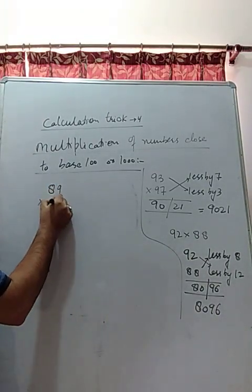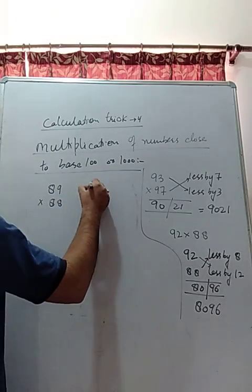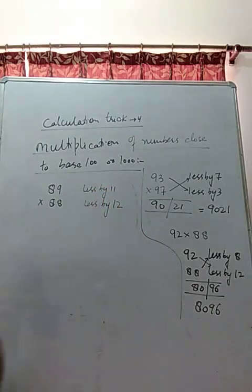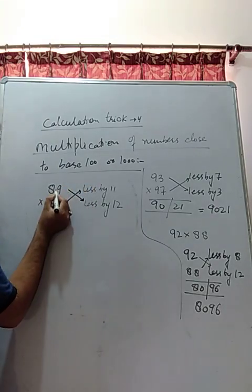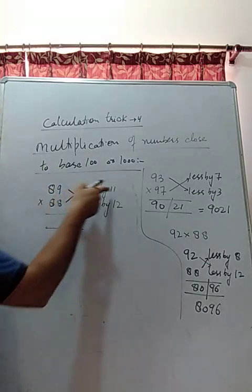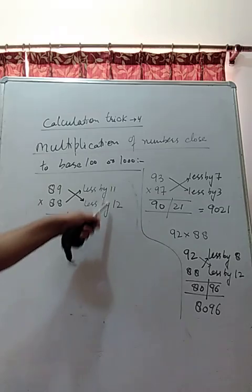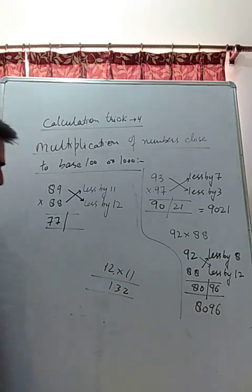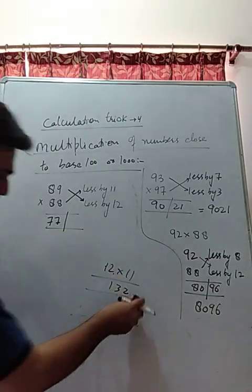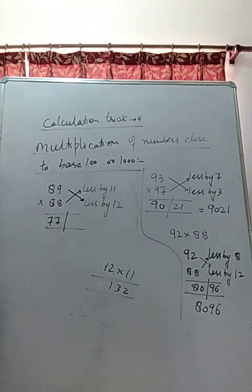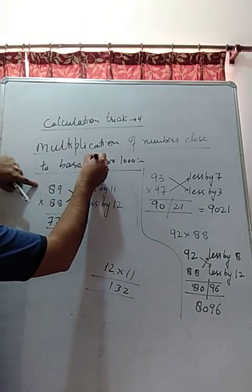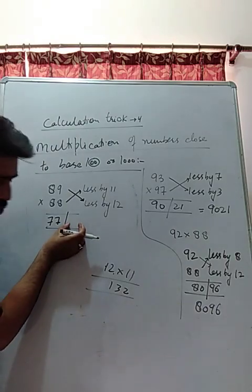If I get a number like this: 89 into 88, what to do? 89 is less by 11, 88 is less by 12. Cross subtract them like this: 89 minus 12 is 77, 88 minus 11 is 77. Now look here, what is 12 into 11? We mentioned in the trick of multiplication of 11: 2, 2 plus 1 equals 3, 1. It's 132. How to multiply with 11? It's the trick. The answer is 132.